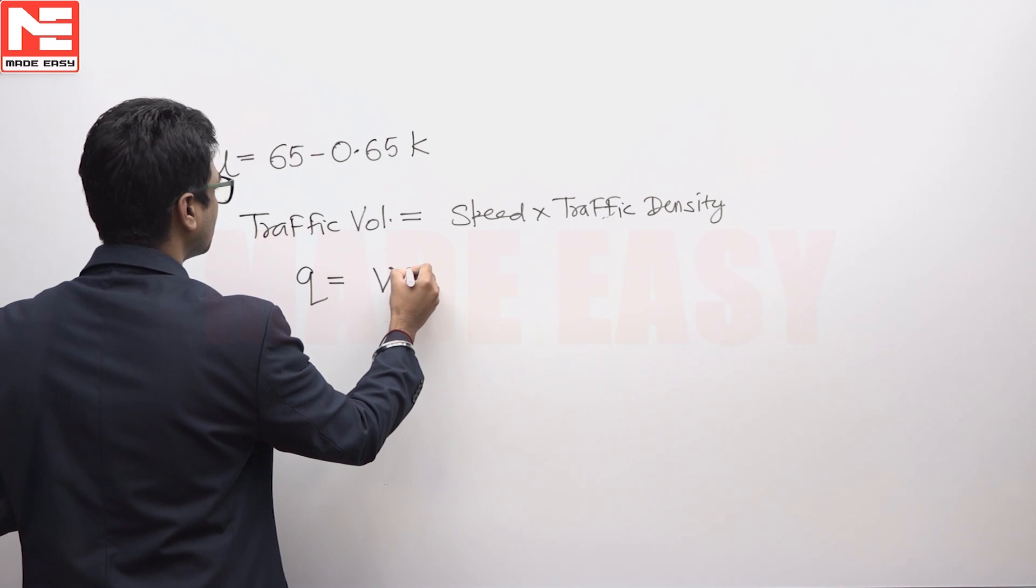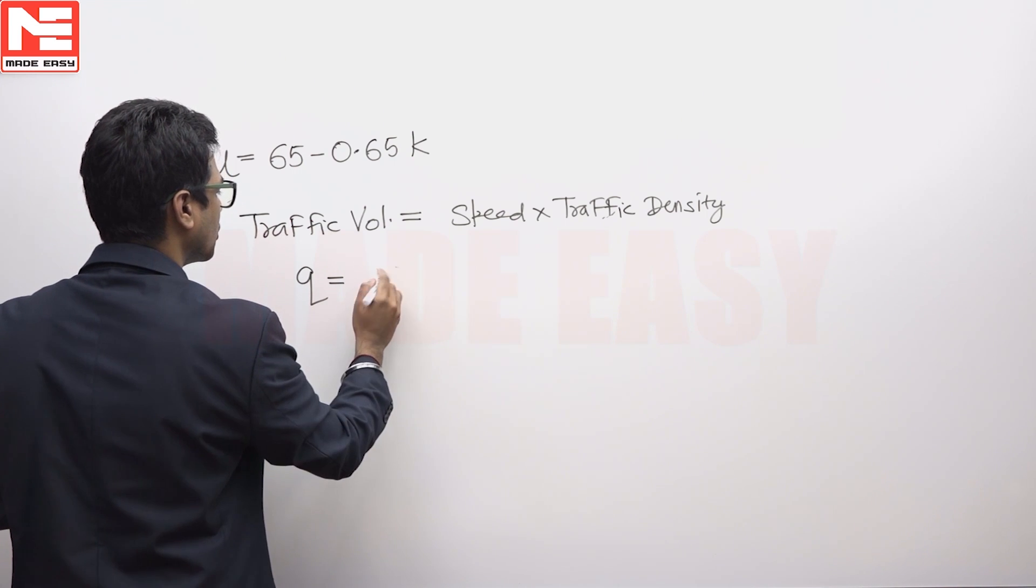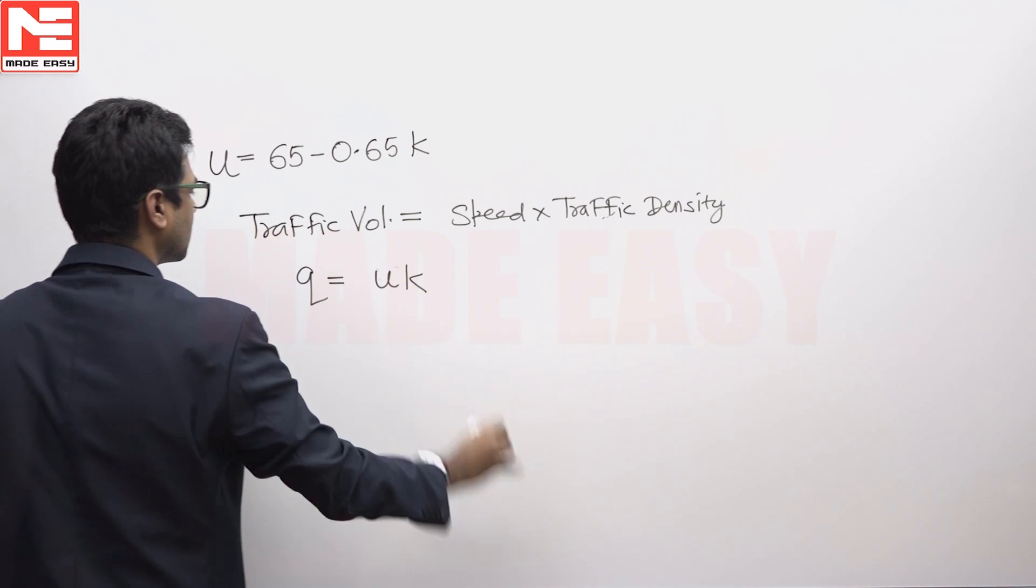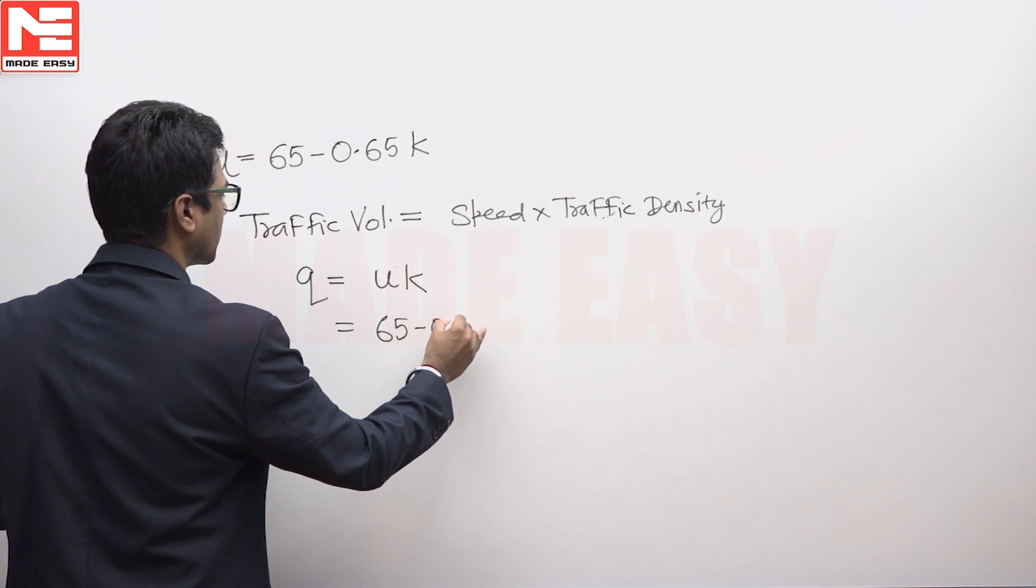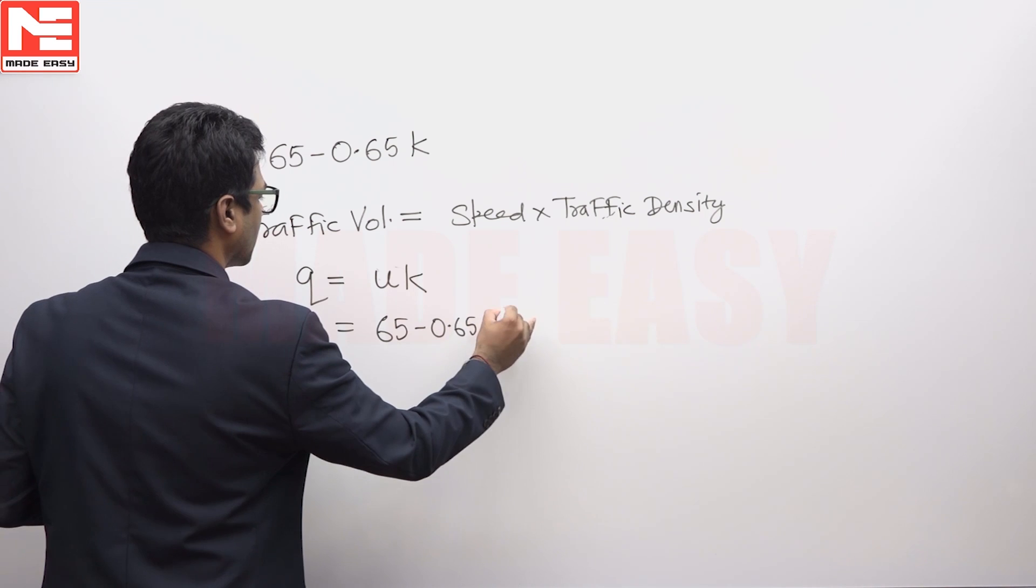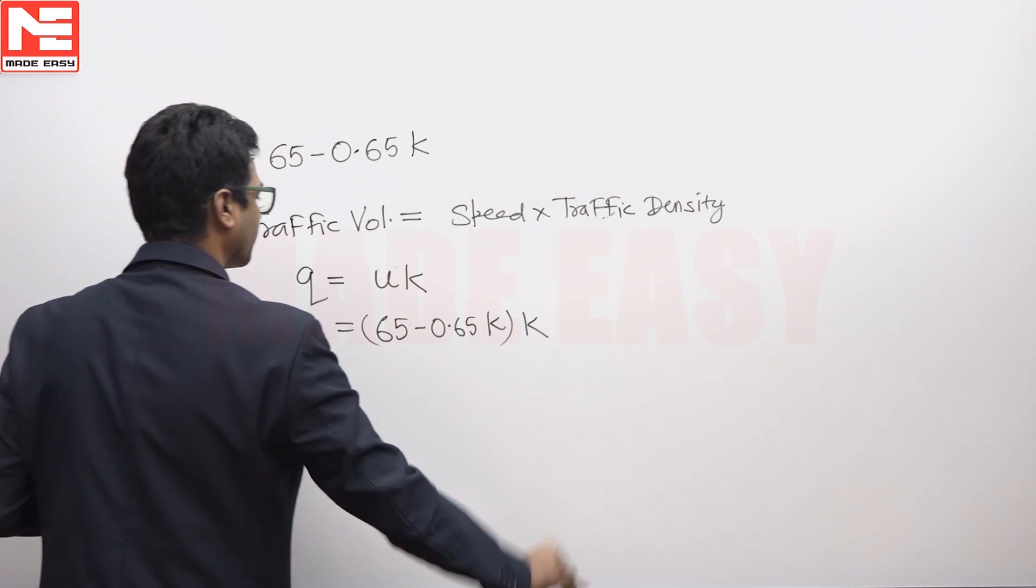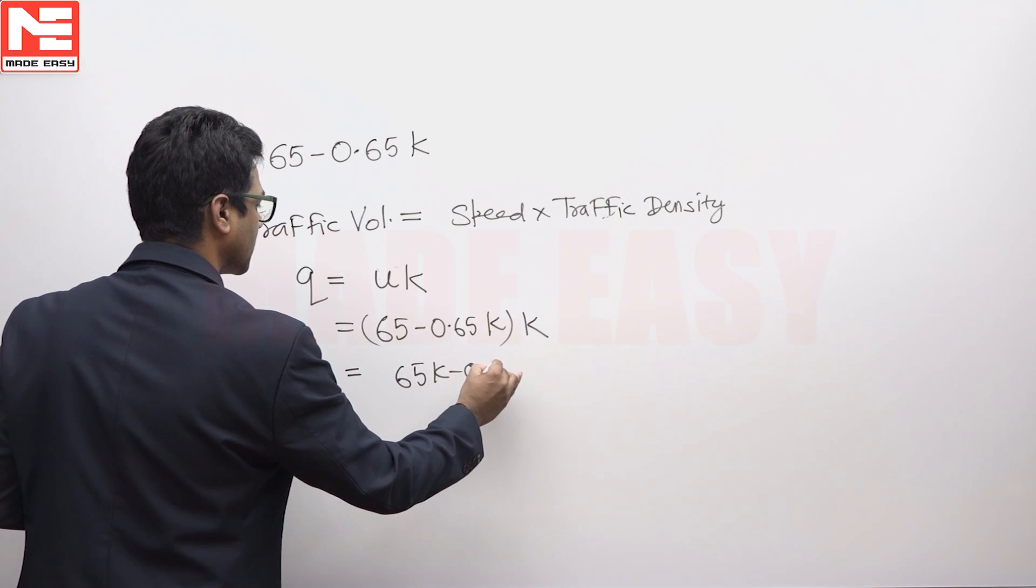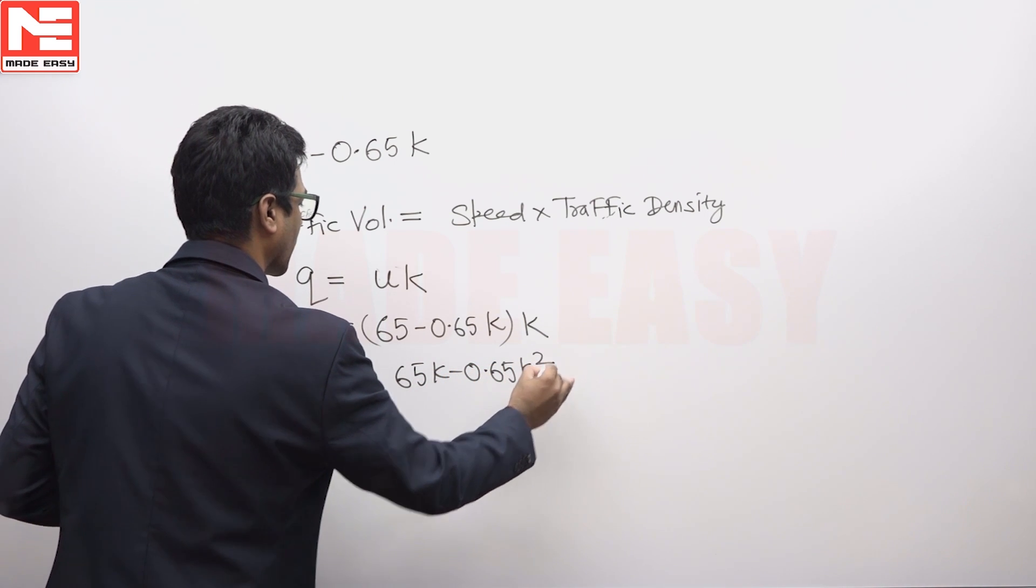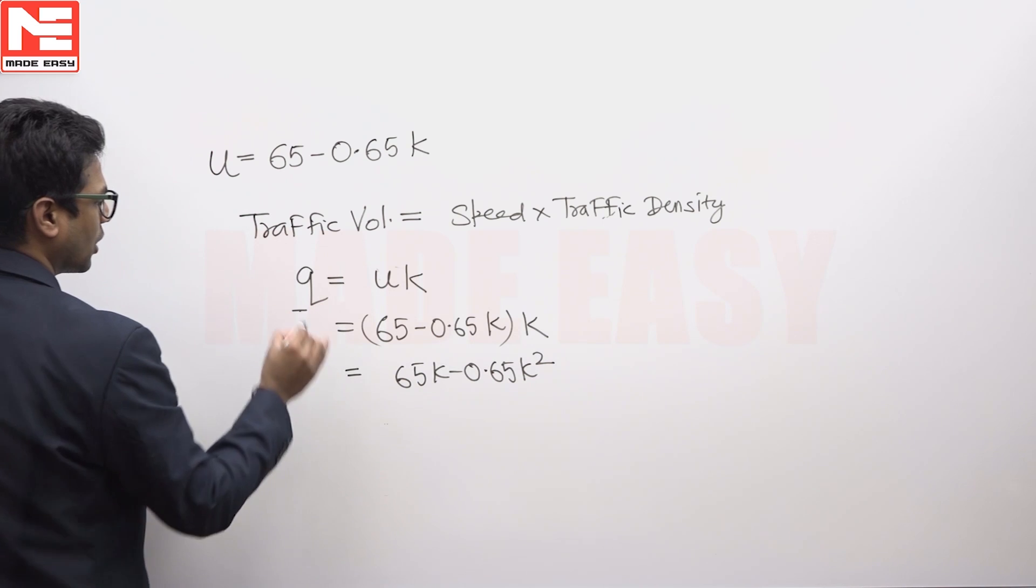So we can write q equals u into k, which equals (65 minus 0.65k) into k. This equals 65k minus 0.65k squared.